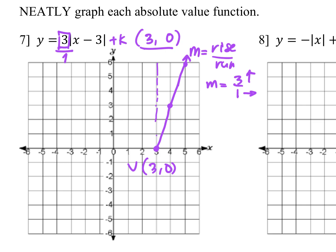Remember that this graph is symmetric to its vertex. The distance from the first point to the axis of symmetry is 1, so we mirror those points on the left side. Connecting everything gives us the complete graph, which opens up because the 3 is positive.